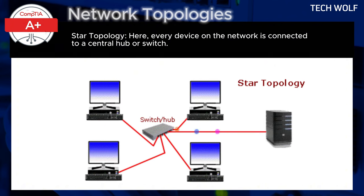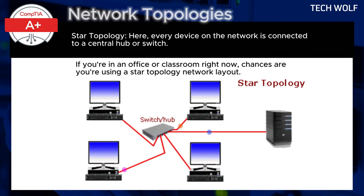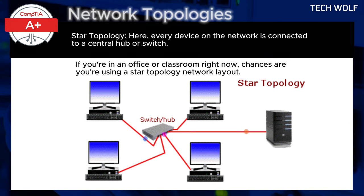Another widely used network layout is star topology. Here, every device on the network is connected to a central hub or switch. This central device manages the communication by receiving data from one device and transmitting it to the intended destination.